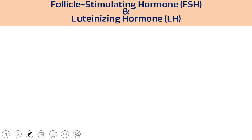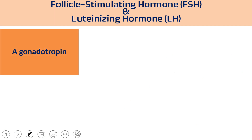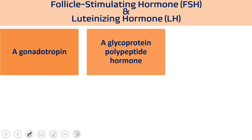Looking at the biochemical features of FSH and LH: both are gonadotropins released from the anterior pituitary and are chemically glycoproteins — a polypeptide hormone. It is a modified protein where carbohydrates, whether monosaccharides, disaccharides, or polysaccharides, are associated with proteins.